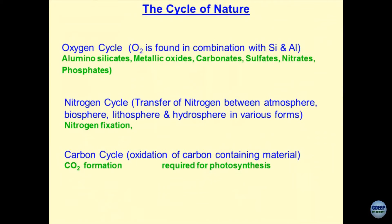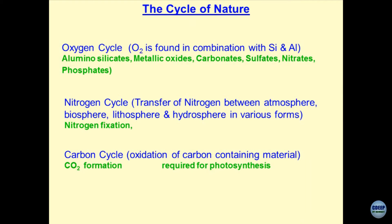Before discussing man-made environment, let us revisit the natural cycles. The oxygen cycle is the genesis of the oxides present in soils — as a geotechnologist, we are interested in oxides of silica, alumina, iron, magnesium, sodium, and potassium, analyzed by XRD analysis. Most silicates, aluminates, metallic oxides, carbonates, sulphates, nitrates, and phosphates used in fertilizers or discharged from industries are a good example of the oxygen cycle — metals got oxidized and hence these oxides are formed.